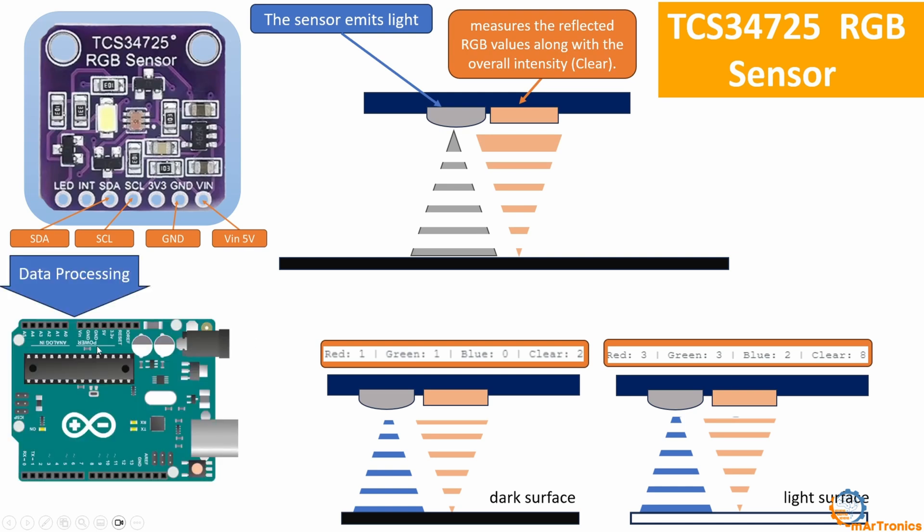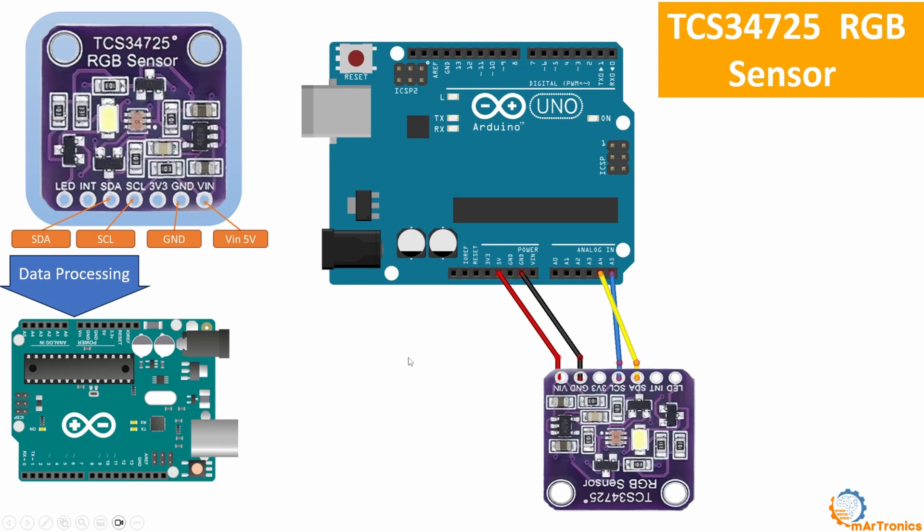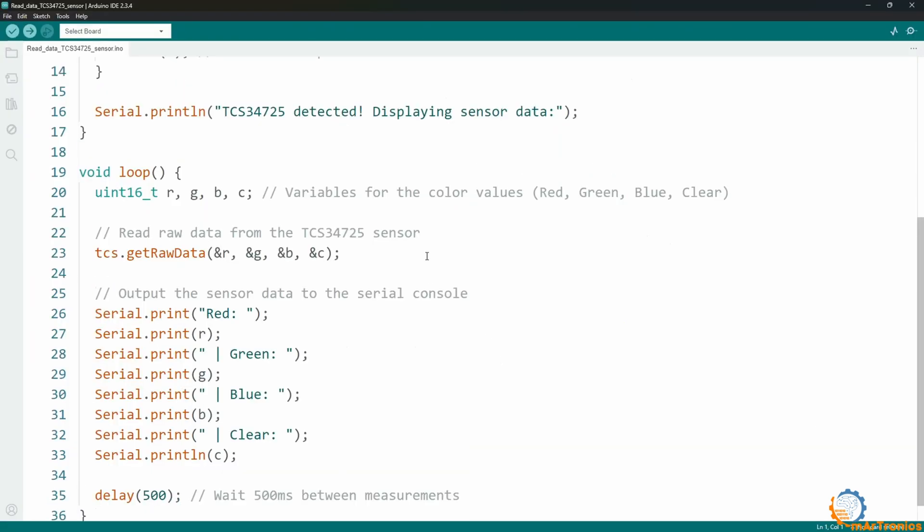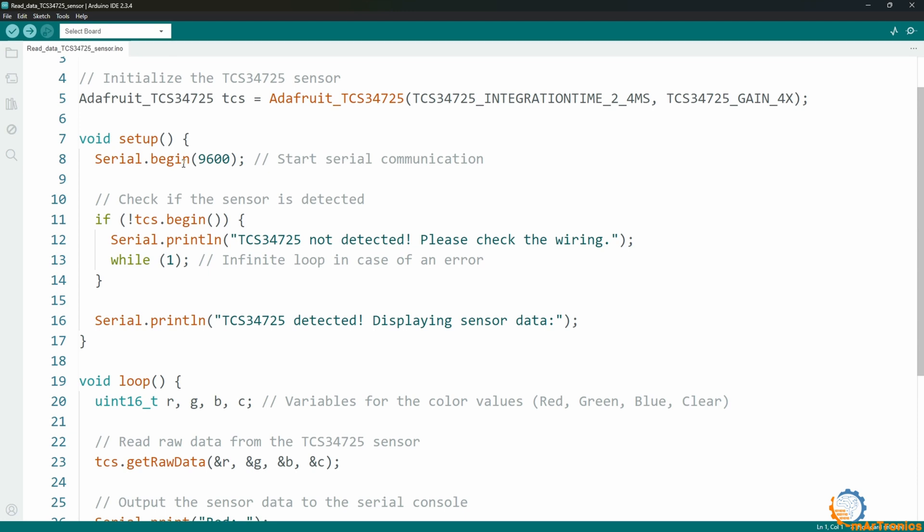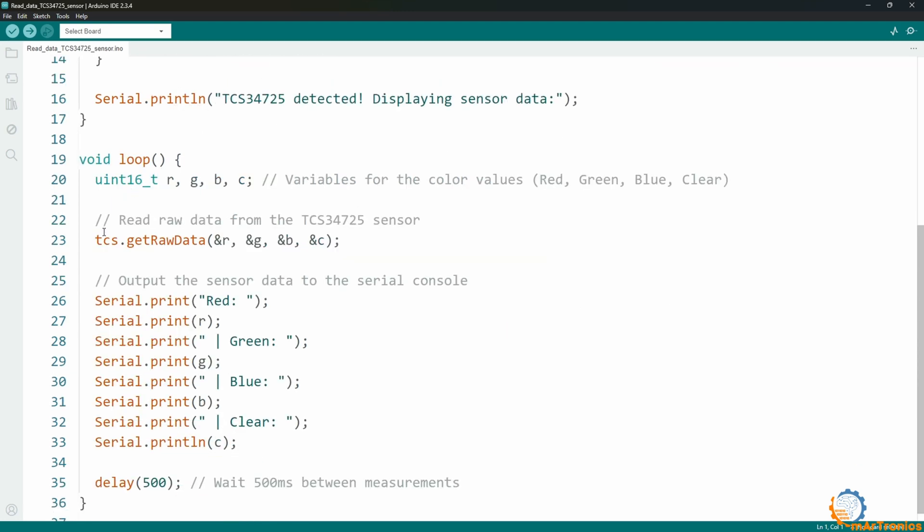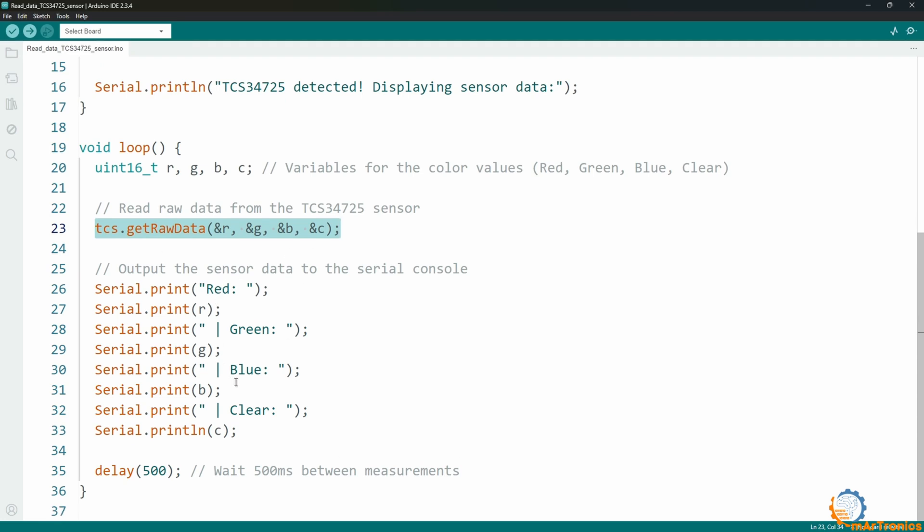To use the information provided by the sensor, we will use Arduino board to process this data. Now, I will do this experiment so that I will connect this sensor to the Arduino board as shown here. Then I will download this code to read the sensor data. First, I added the necessary libraries to communicate with the sensor. Then here I configured the sensor, and then I activated the serial communication. Then I started reading the value the sensor provided and printed it out in the serial monitor.